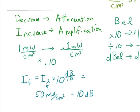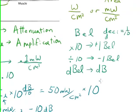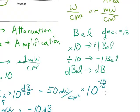So this is equal to 50 milliwatts per square centimeter times 10 raised to the minus 10 over 10, raised to the power of negative 10 over 10. Now negative 10 over 10 is the same as negative 1.